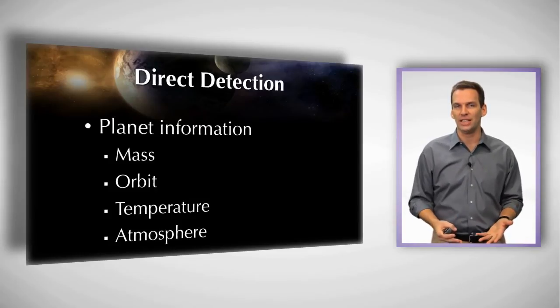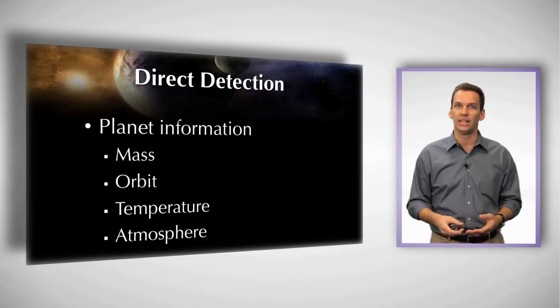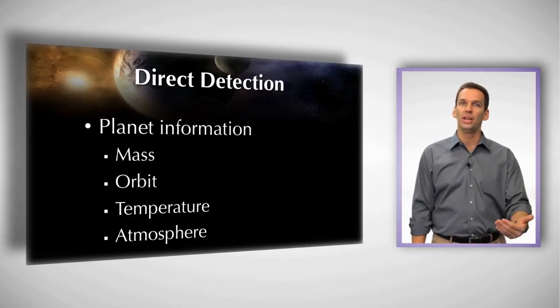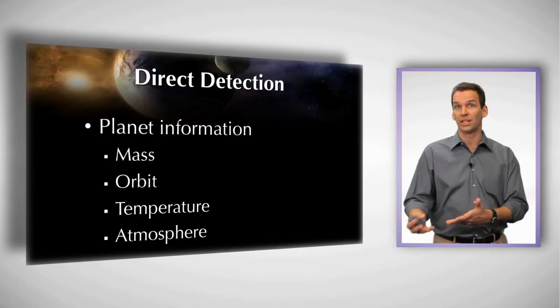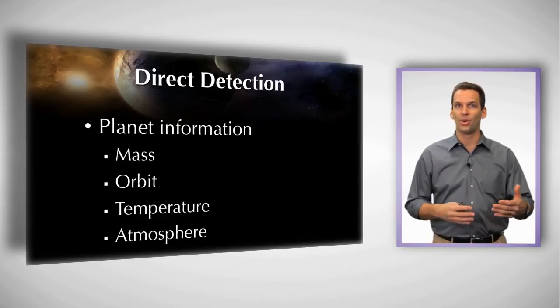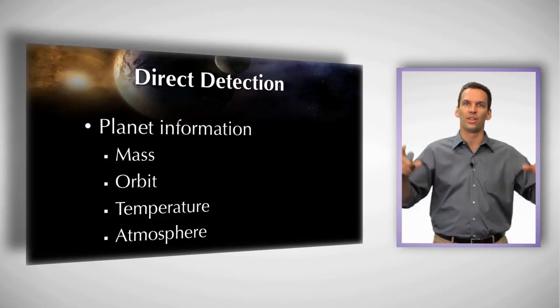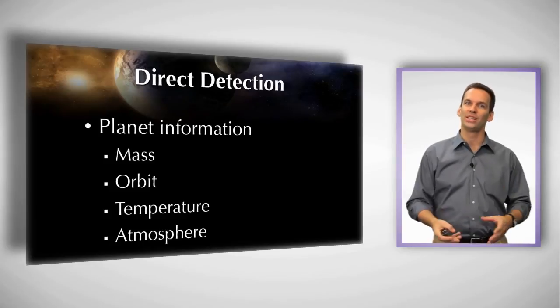The problem with this technique, or what's difficult about this technique, is that very often the light from the planet is anywhere from a million to a billion times dimmer than the light from the star. And so it's kind of like trying to find a firefly up next to one of those big, bright searchlights. It's just a very difficult technique.